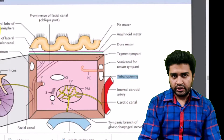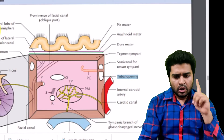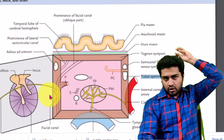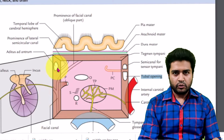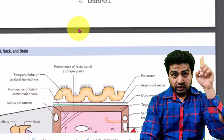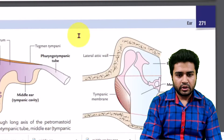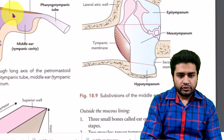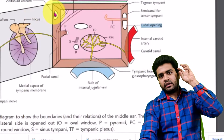Now the posterior wall — remember four main things, starting from above downward. On the upper part of the posterior wall there is the aditus — the entrance from the mastoid. The mastoid process opens into the middle ear through the posterior wall. So at the posterior upper side there is the opening of the aditus, which connects to the mastoid air cells.